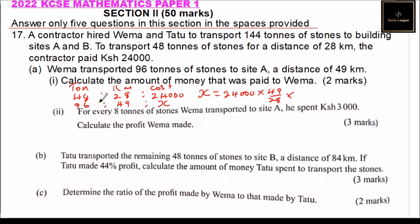The tonnage was 96, so the cost would also rise in the same ratio, giving us 96 divided by 48. When you work it out, Wemma would have been paid 84,000.